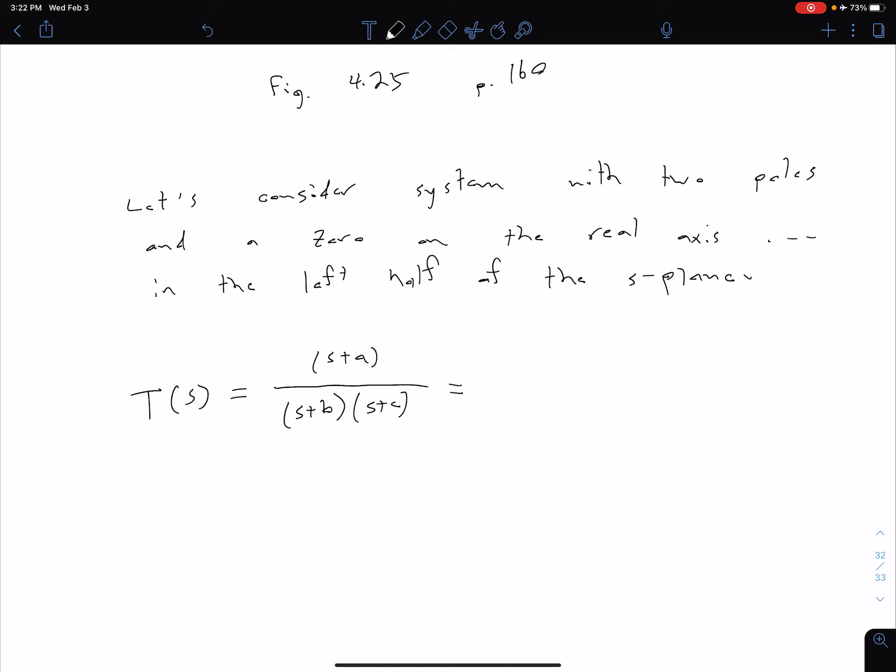Well, we can separate this out using our partial fraction expansion. So we're going to have some term capital A over s plus B plus some term capital B over s plus C. And so remember these capital A and B here, these are just variables that we're trying to solve for in order to be able to do our inverse Laplace transform.